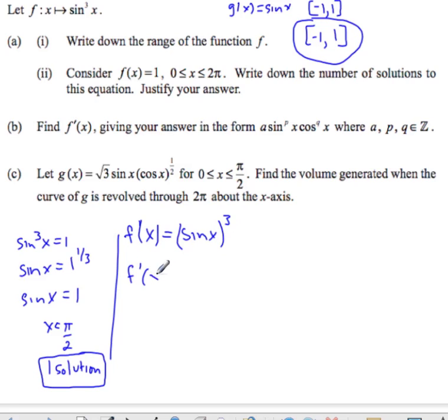So F prime, bring down the 3, keep the inside the same, minus 1 is 2, times the derivative of the inside, negative, sorry, positive cosine.